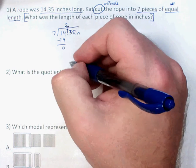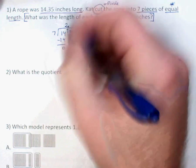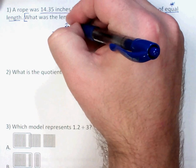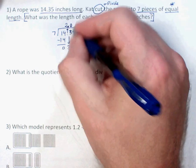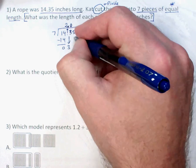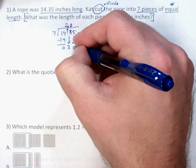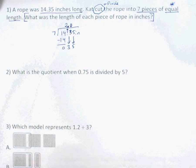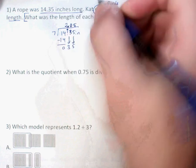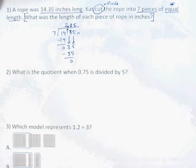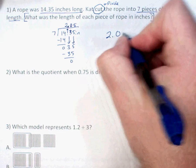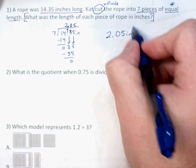If this were a normal division problem, I'd bring down the three, but seven won't go into three, so I put a zero here. Then I bring the five down and seven goes into 35 five times — five times seven is 35, no remainder. So my answer is 2.05 inches — two and five hundredths inches.